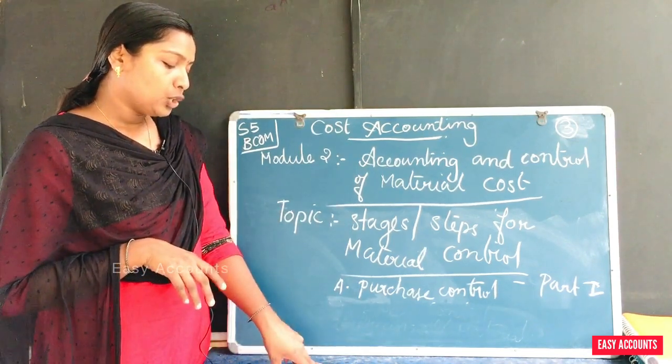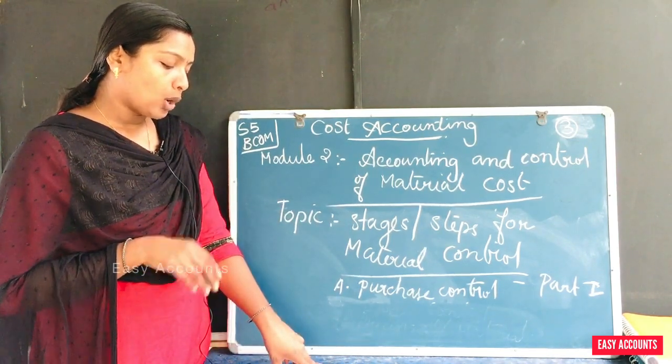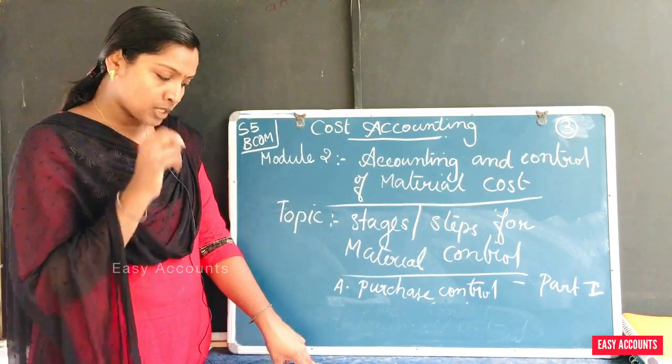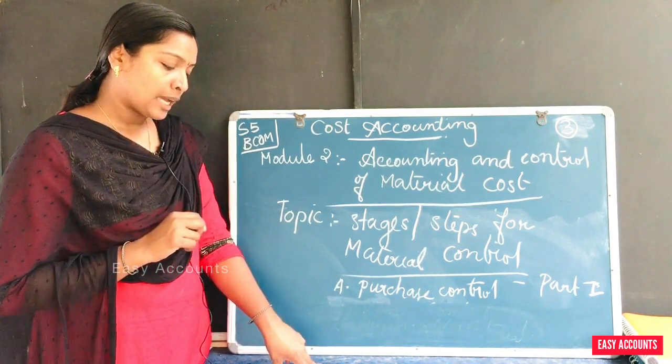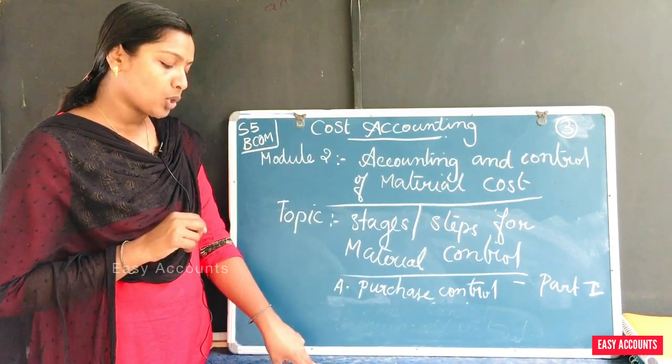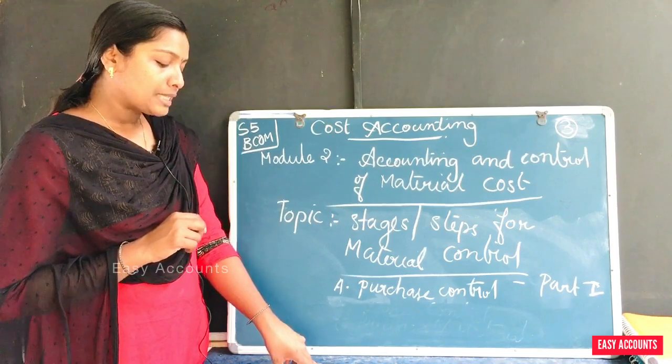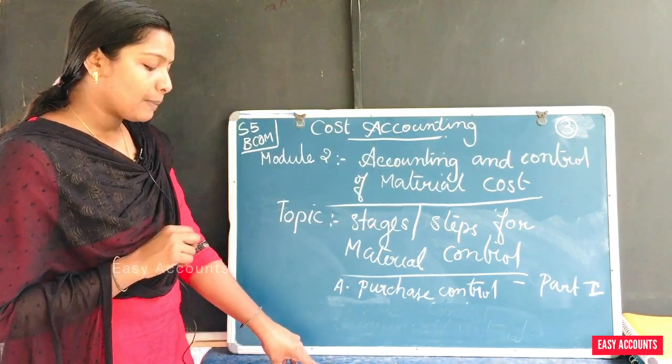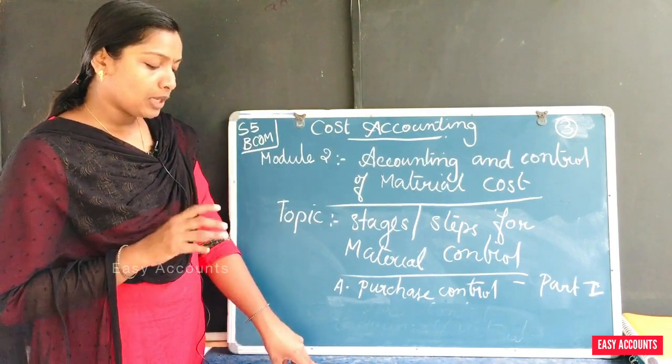The department should also develop alternative sources of supply, so that materials may be purchased from those alternative sources whenever a particular supplier fails to supply the materials.